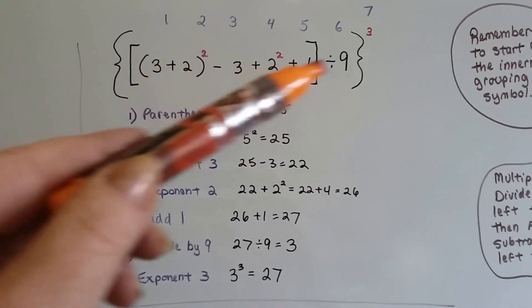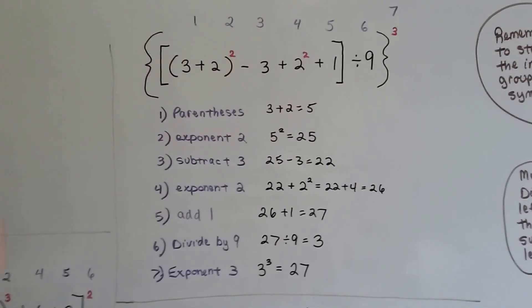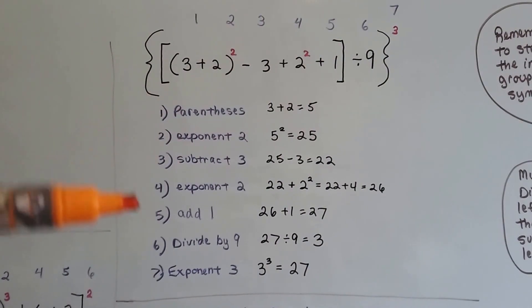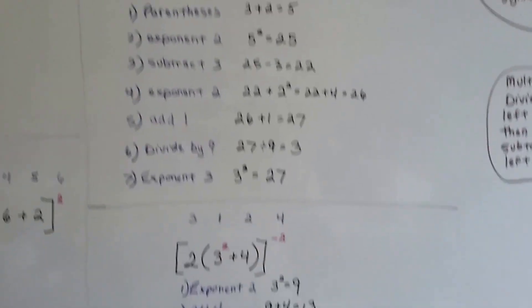So this whole thing equaled 27, which is silly because we were right there when we were at step 5, right? But by continuing on, we ended up at 27 again.